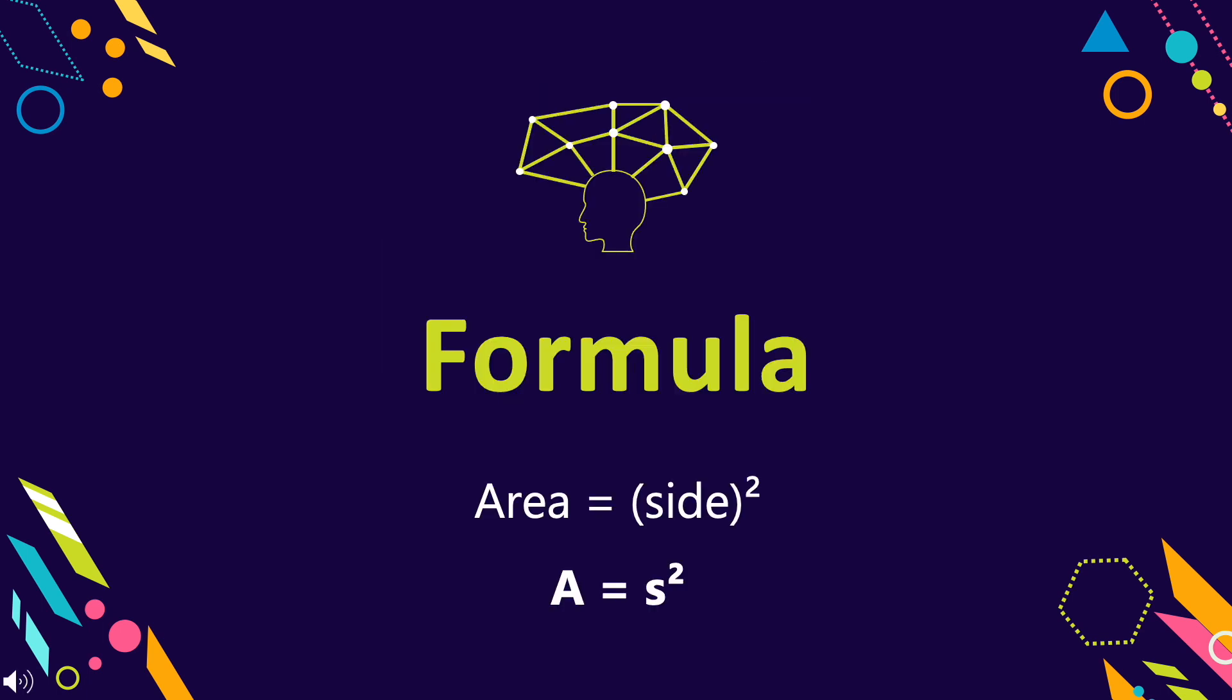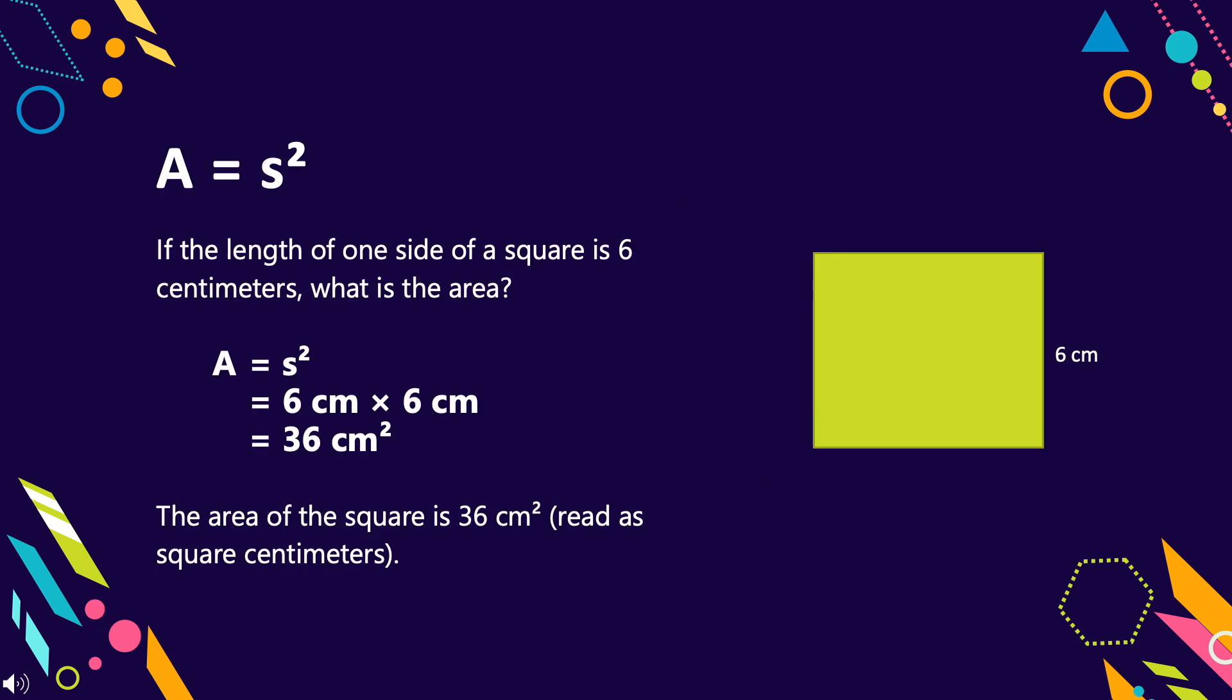The formula for finding the area of a square is area equals side times side, or A equals S squared. Here are some examples.